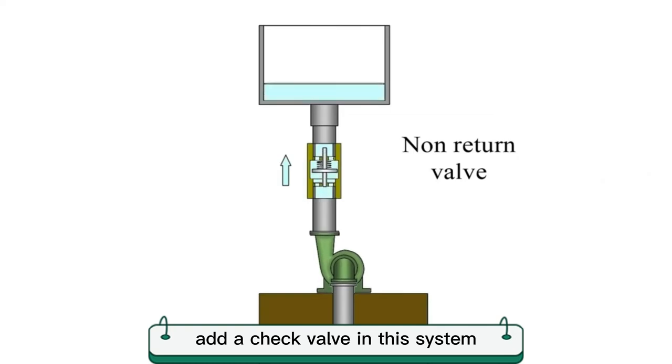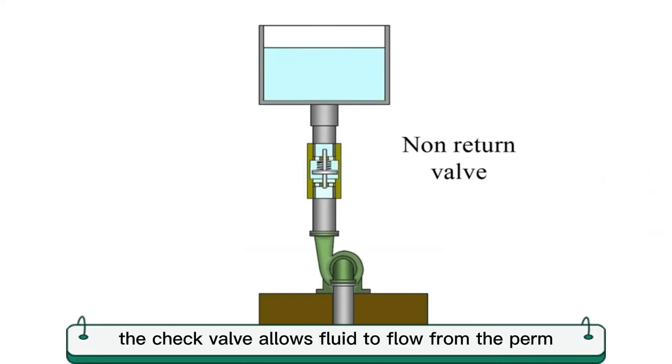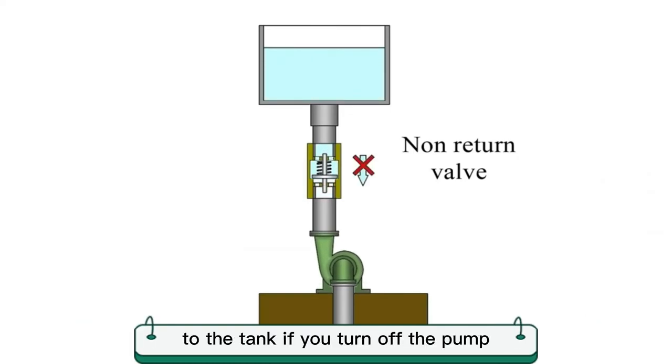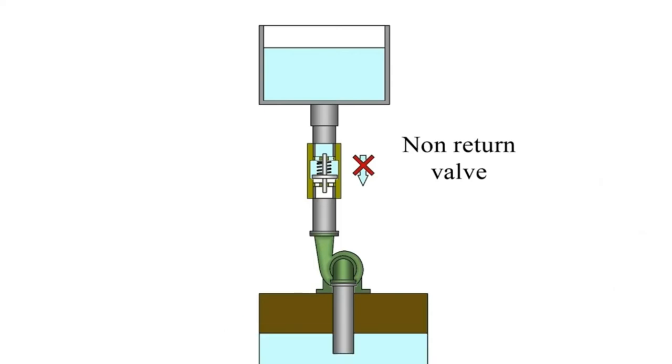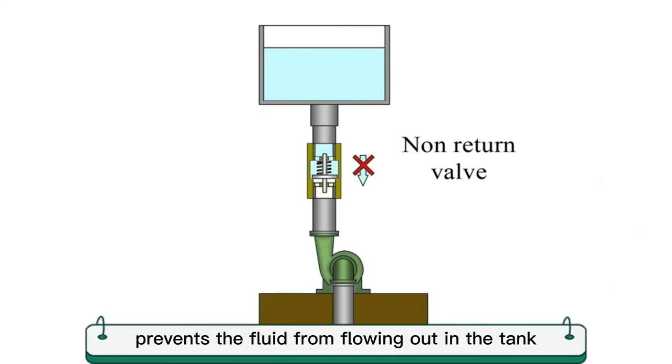Add a check valve to this system. The check valve allows fluid to flow from the pump to the tank. If you turn off the pump, the check valve prevents the fluid from flowing out of the tank.